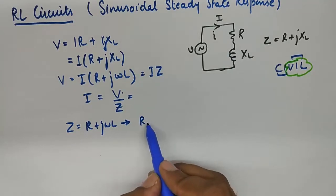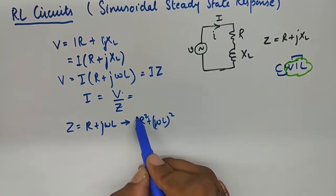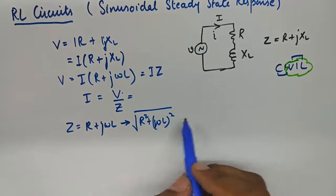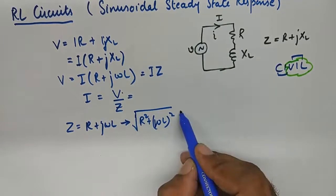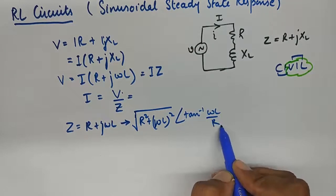If I take it to polar coordinate system, I get square root of R squared plus omega L squared, which becomes the magnitude. And angle becomes tan inverse omega L upon R.